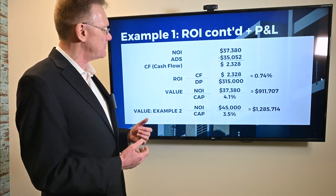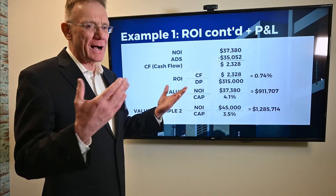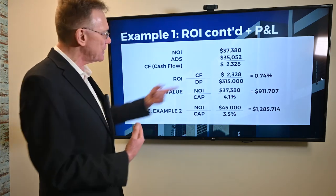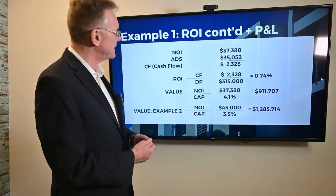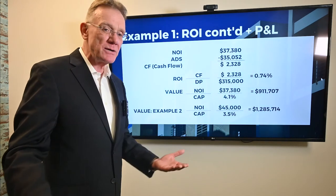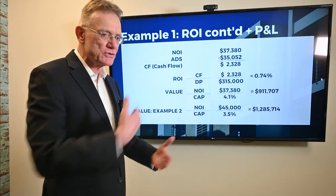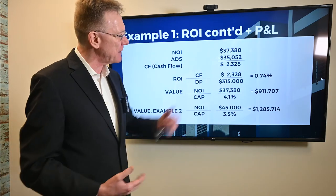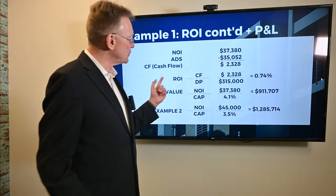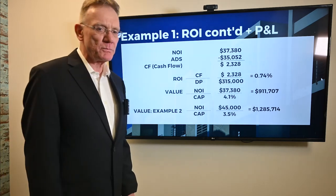In this example, we want to look at our ROI expressed as a percentage. We take our cash flow and divide it by how much money we invested — our down payment, since we didn't buy all cash, we only used 35%. That gives us a return on our investment of 0.74%.